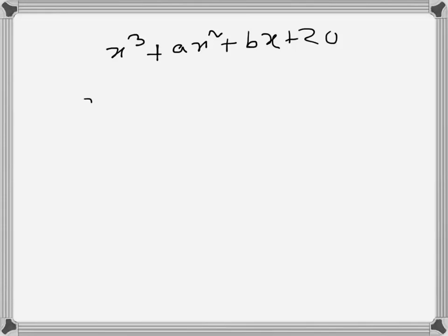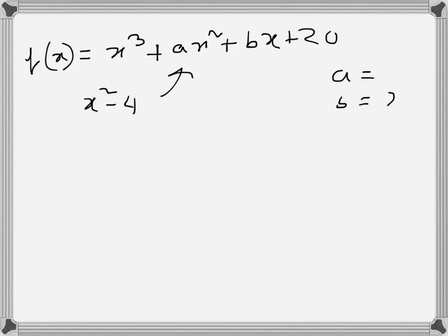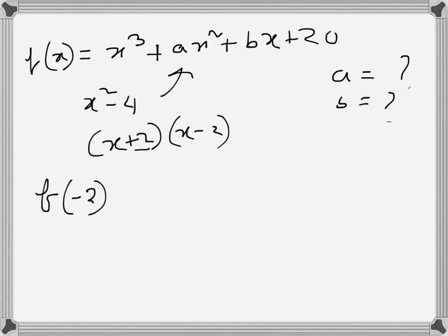x squared minus 4 can divide x cubed plus ax squared plus bx plus 20. We need to find the values of a and b and also find the third factor. Since x squared minus 4 divides it, that means (x+2)(x-2) divide it, so applying the remainder theorem we can write f(-2) will be 0.